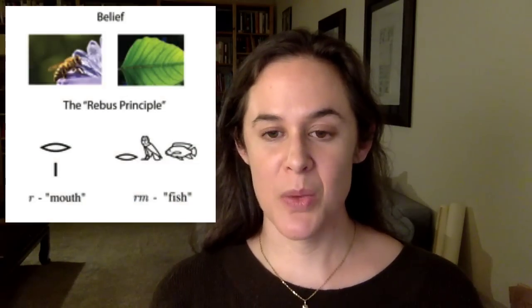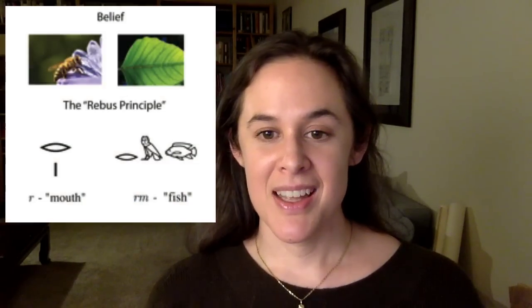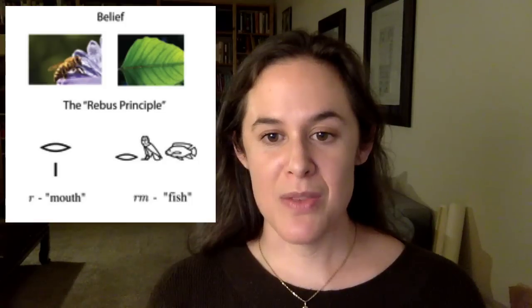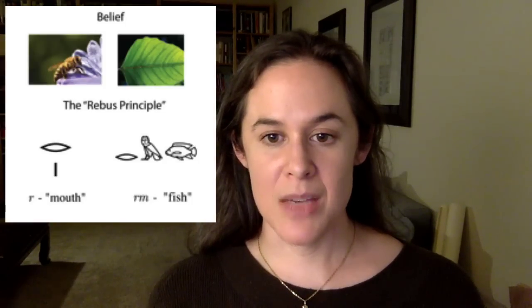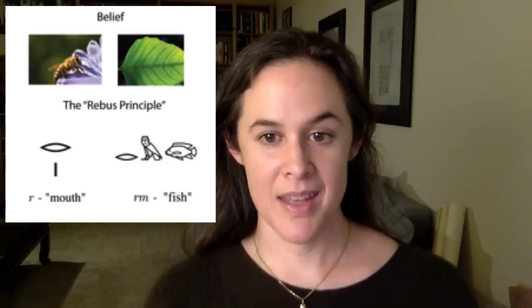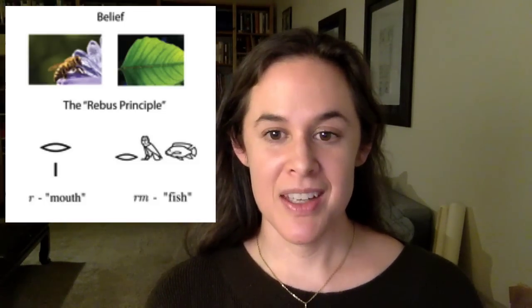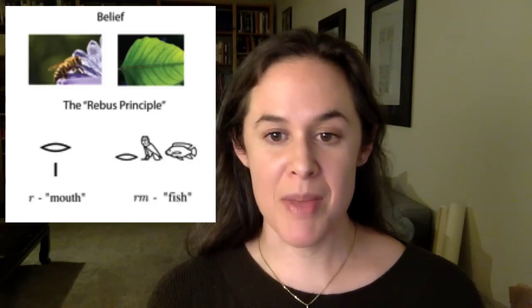The most famous illustration of the Rebus Principle in English is writing the word 'belief' with a picture of a bee and a picture of a leaf. The ancient Egyptian word for mouth includes the consonant R. We don't know what the vowel sound would have been, but when we pronounce it today, we say 'ra' or 'ro.' For this reason, the hieroglyphic sign showing a mouth is used to represent the consonant R in words like 'rem,' meaning fish.